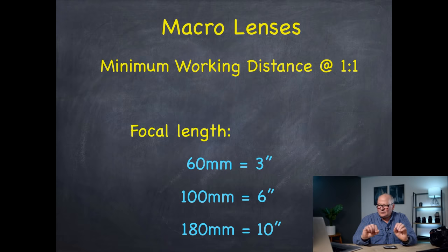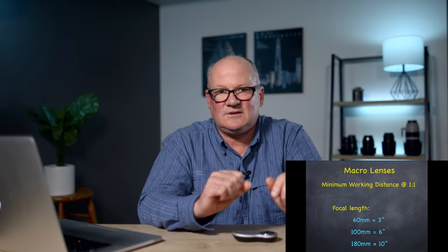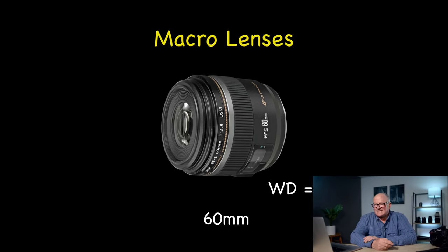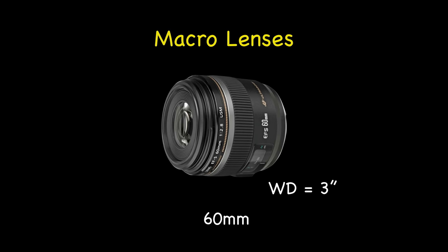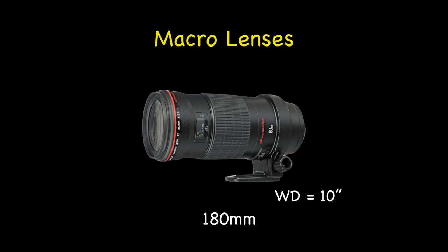Certainly the view changes a little bit too — a 180mm is a telephoto so you have a narrower view, 100mm a little wider, and 60mm even wider. That's a subtle change because you're so close, but it might still be important. Here are just a few slides of the macro lens categories: there's a 60mm with a working distance of three inches, a 100mm macro at six inches, and the 180mm at a working distance of ten inches.